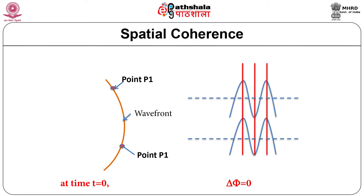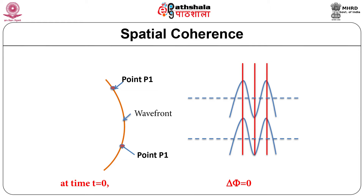Let us see what is spatial coherence. Consider two points P1 and P2. At time t equal to 0, they lie on the same wavefront of a given electromagnetic wave. Let E1(t) and E2(t) be the electric fields at these two points respectively. The phase difference between the fields will be 0 at time t equal to 0. If this difference remains 0 for any time t greater than 0, there is perfect spatial coherence between the two points. If this is followed by every point on the wavefront, then the wave has perfect spatial coherence.